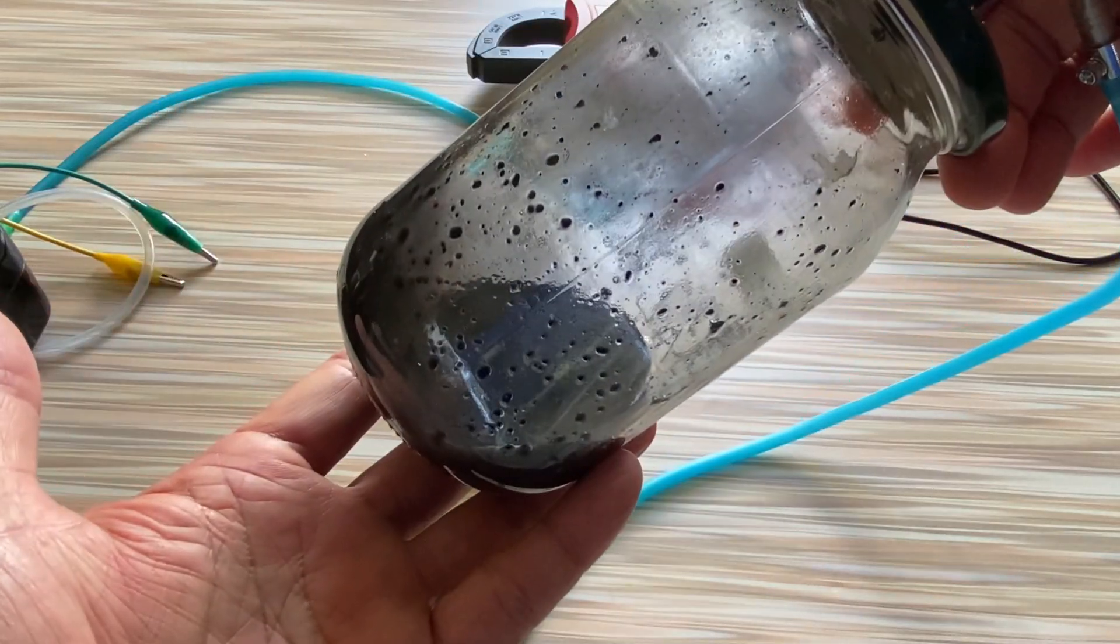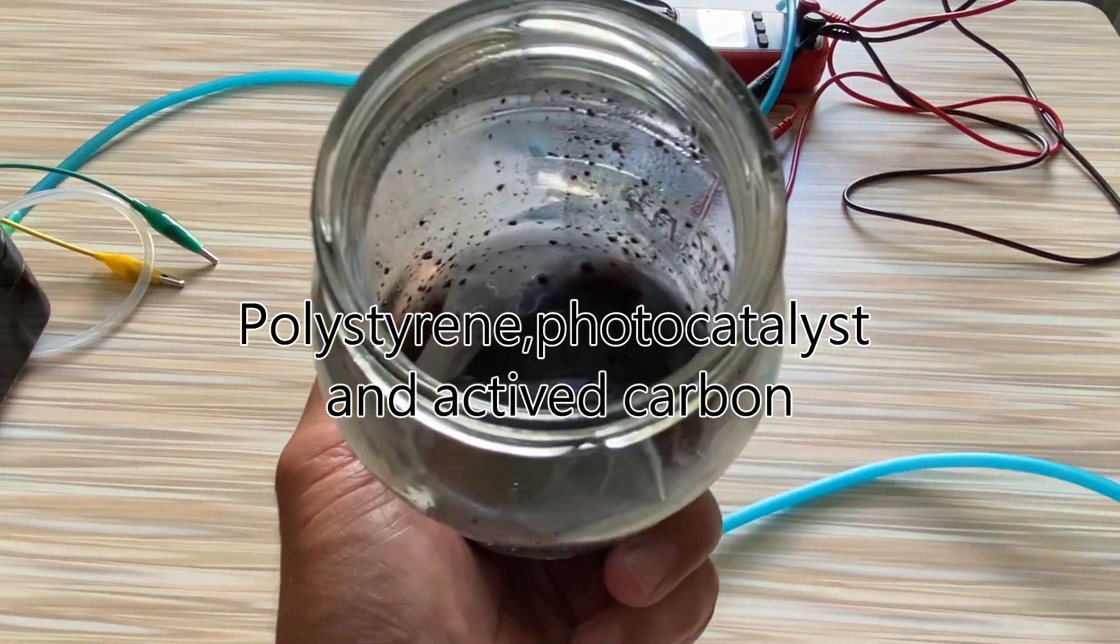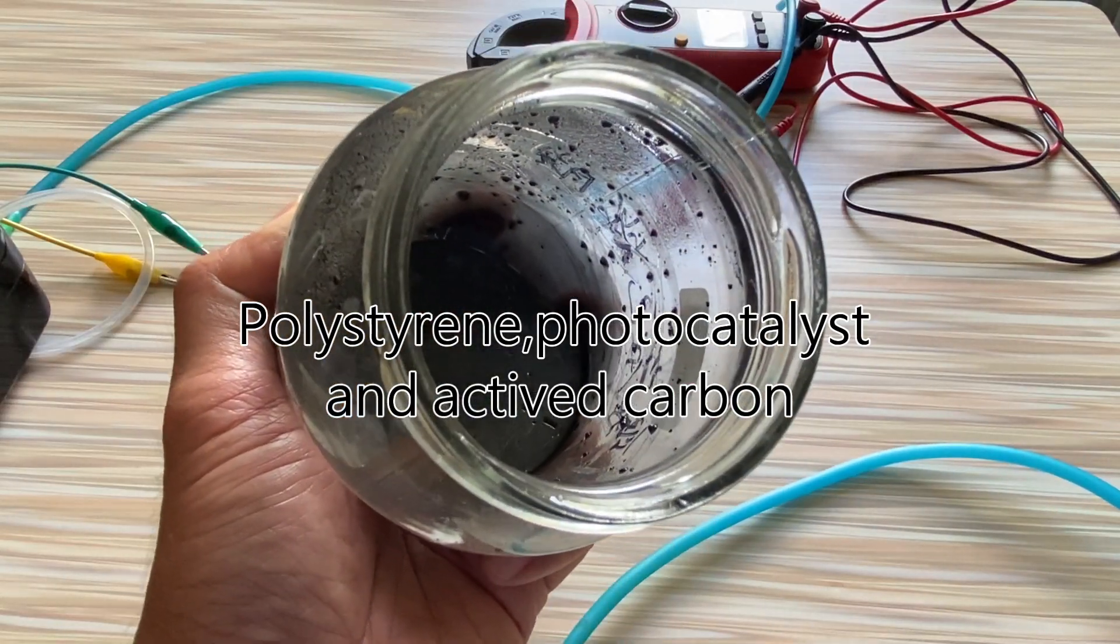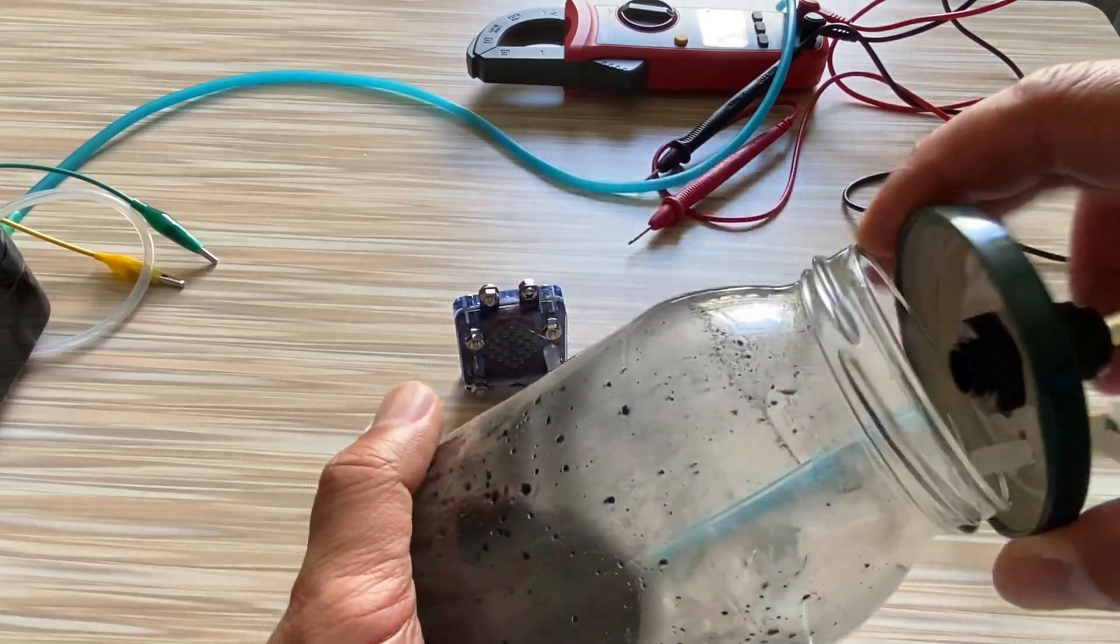All right, let's jump to start. We need to prepare some mixture of plastic waste. After a little adjustment, I mix some activated carbon into the mixture since it can absorb more energy during the debonding.